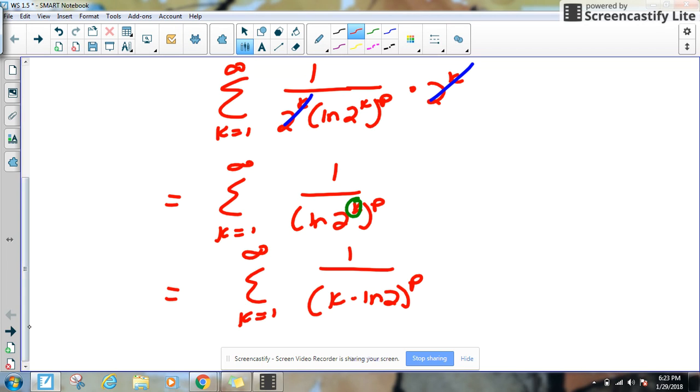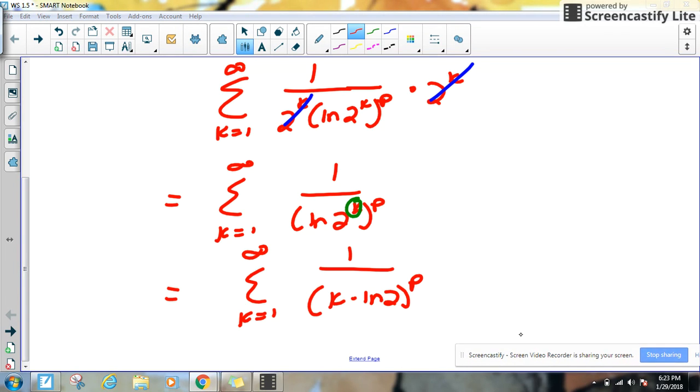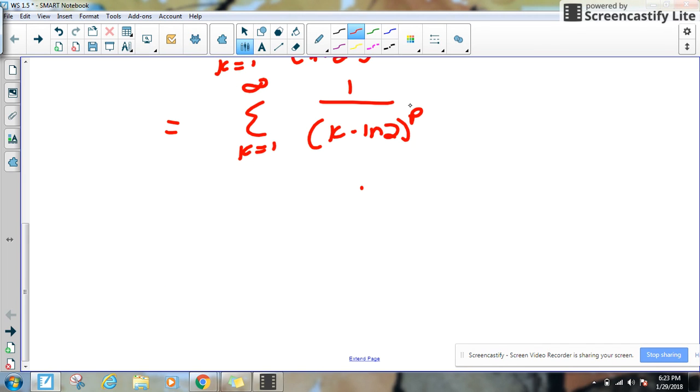Okay, and to consider this further, what we're going to do is we're going to move the p. We're going to actually just distribute it to both of these two terms. So it's going to be the sum from k equals 1 to infinity of 1 over k to the p, and this is just going to be times natural log of 2, all raised to the p.